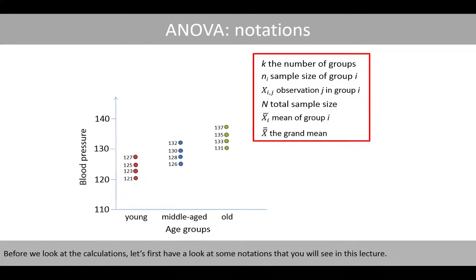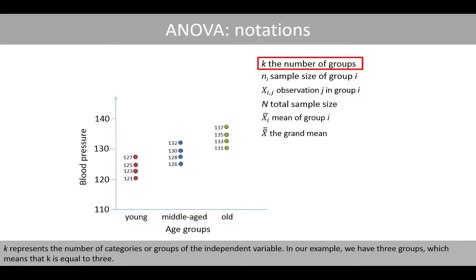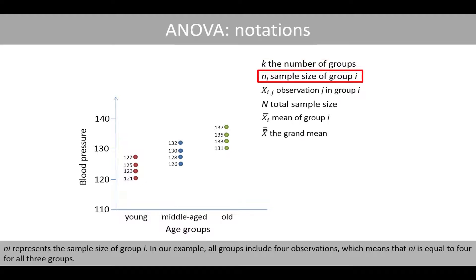Before we look at the calculations, let's first have a look at some notation that you will see in this lecture. K represents the number of categories or groups of the independent variable. In our example, we have three groups, which means that K is equal to three. Ni represents the sample size of group i. In our example, all groups include four observations, which means that Ni is equal to four for all three groups.